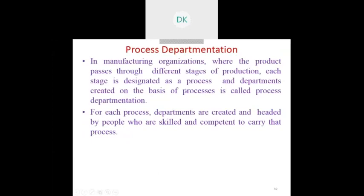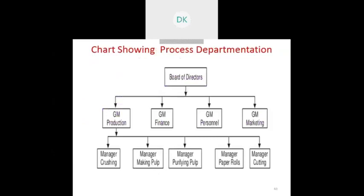Process departmentation means one particular product passes through different stages of production, and each stage is called a sub-process. The chart shows the board of directors with production divided into activities such as manager crushing, making pulp, purifying the pulp, paper roll, and cutting. This is used in the manufacturing of the paper industry.